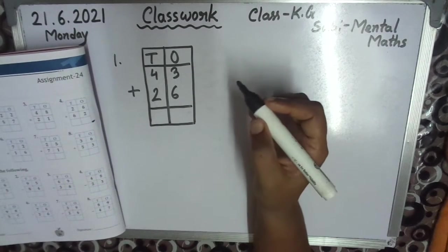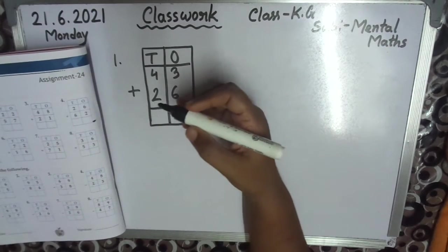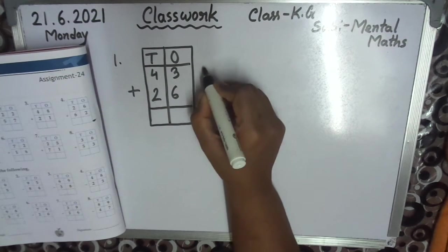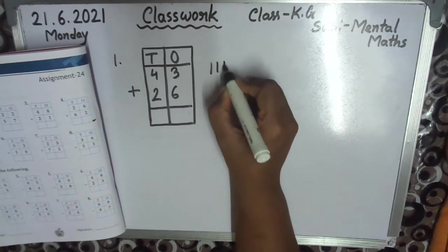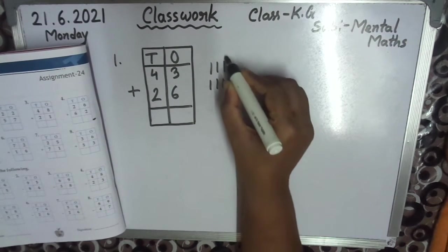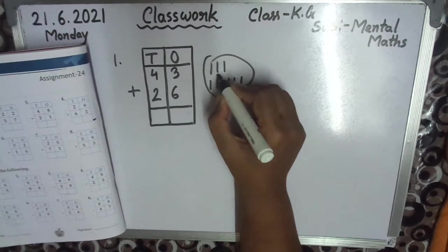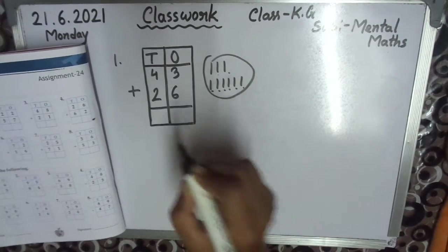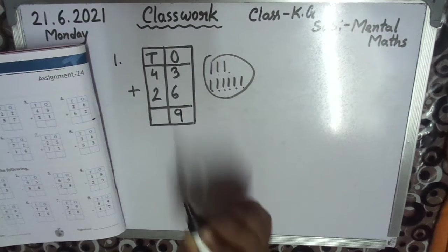Addition. 3 plus 6. So you draw here 1, 2, 3, and 1, 2, 3, 4, 5, 6. So you count total: 1, 2, 3, 4, 5, 6, 7, 8, 9. So answer is 9.